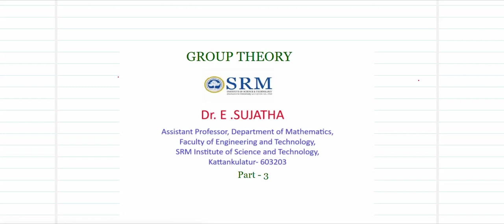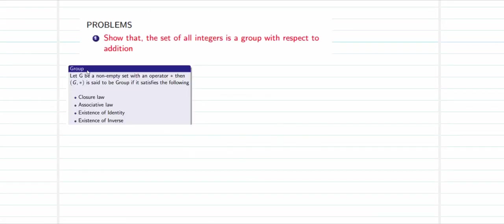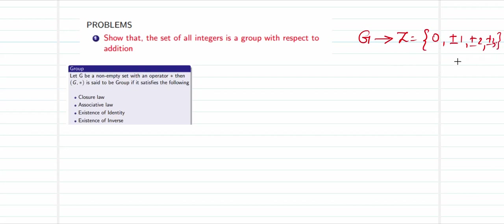Let's get started. Problem number one: we will be asked to show that the set of all integers is a group with respect to addition. The set G is going to be the set of integers Z, consisting of elements 0, ±1, ±2, ±3, and so on. This is going to be an infinite set, so it is not possible for us to pick each and every element and then do the binary operation.